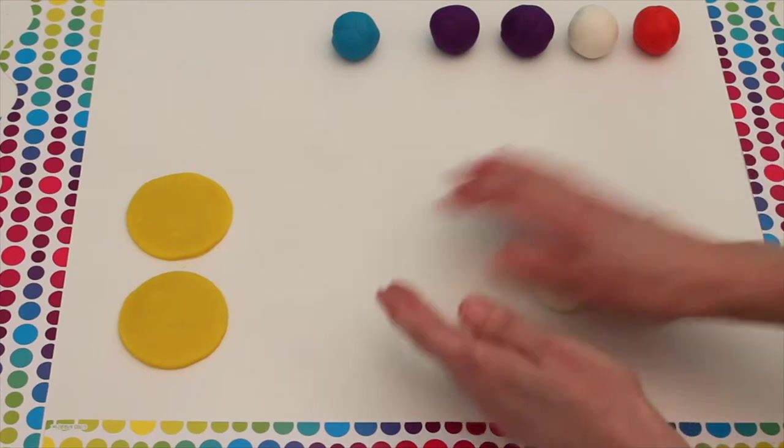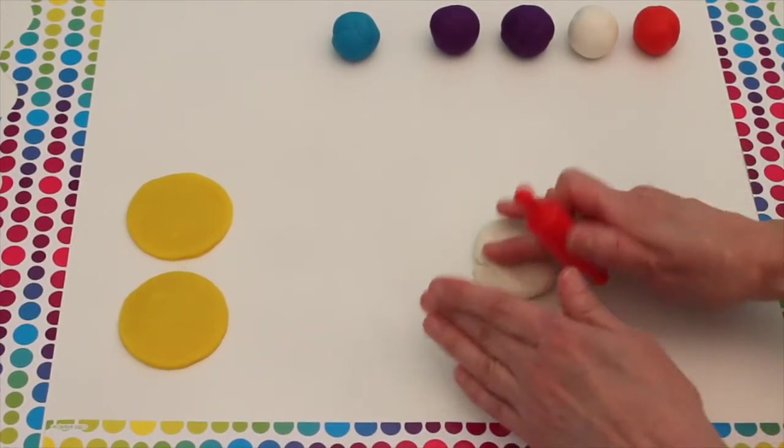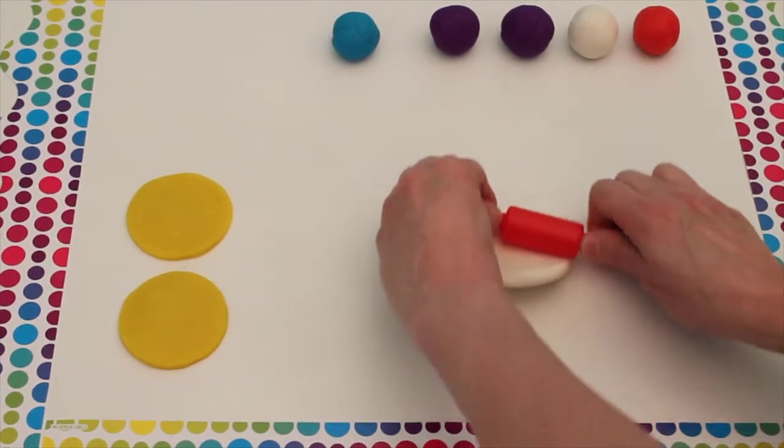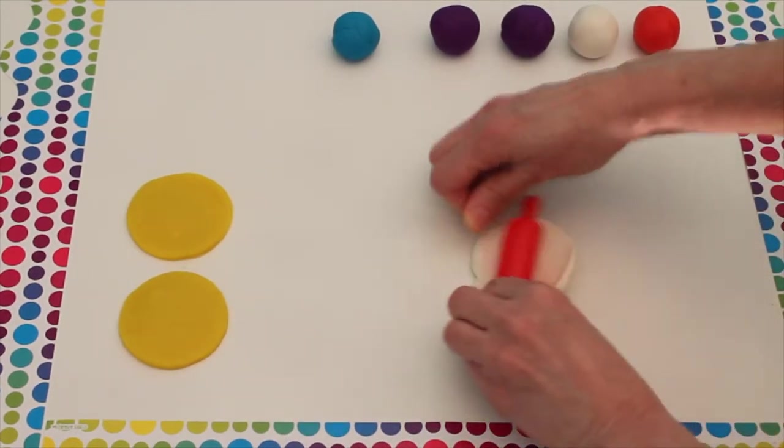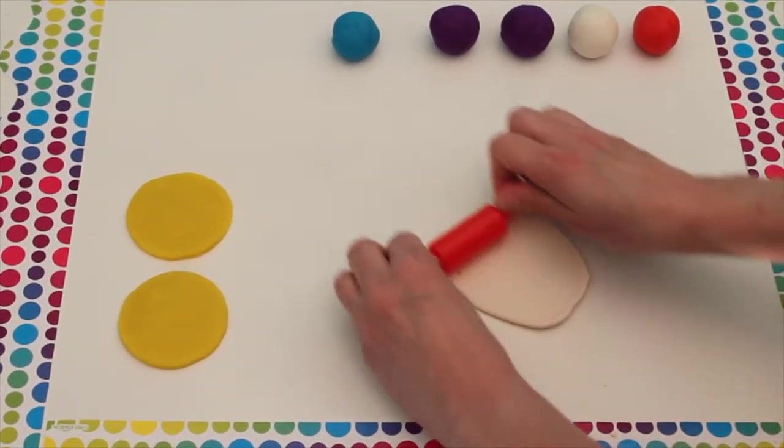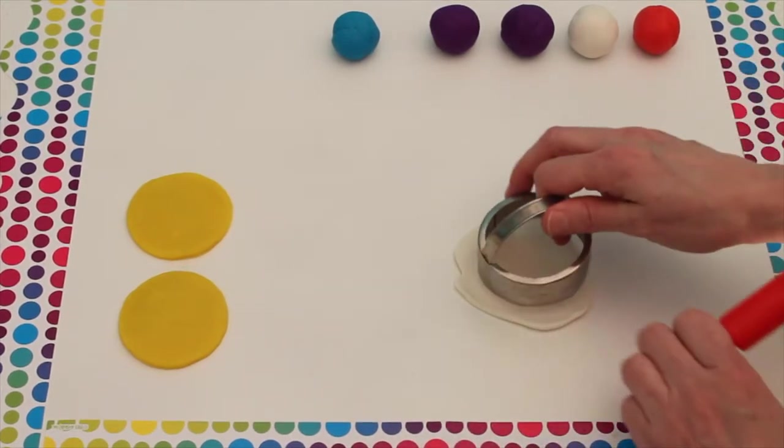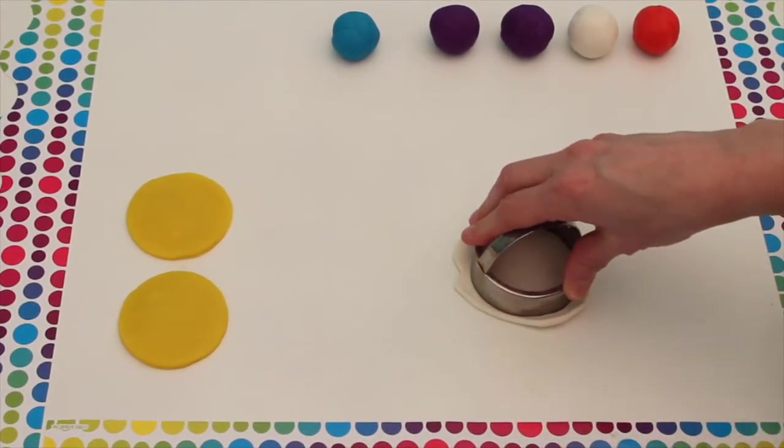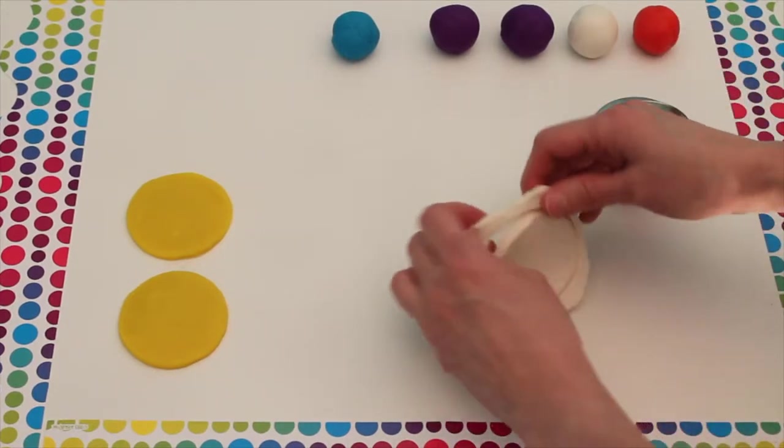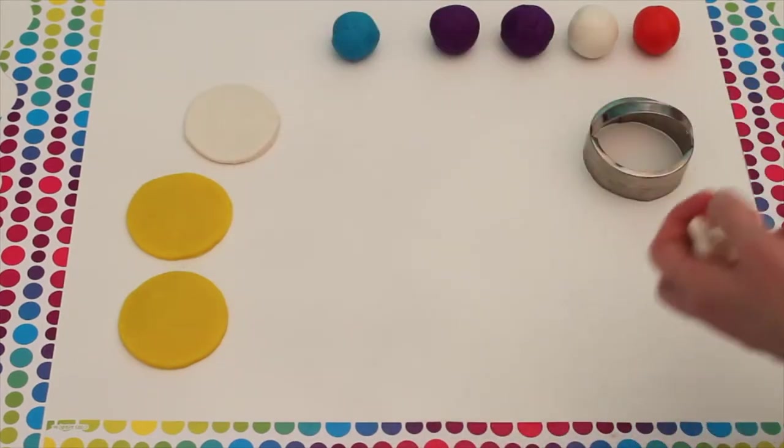Now let's make a white circle. Cut a circle out of that. There we have our white circle.